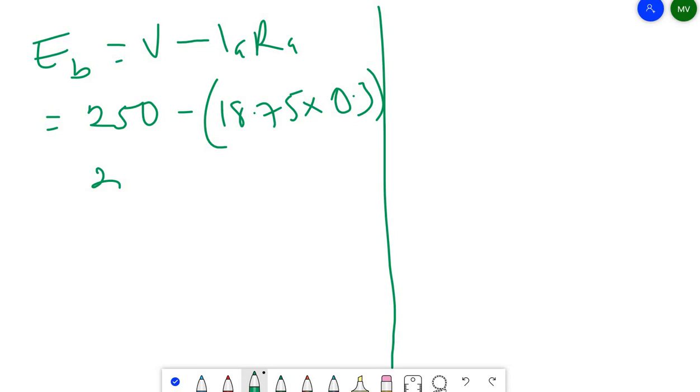So if we are looking for Eb, we already know that our voltage was I think 250 volts. Then we also found out that our Ia was 18.75. So you're going to get 250 minus, when we multiply that, we're going to get 244.4V.